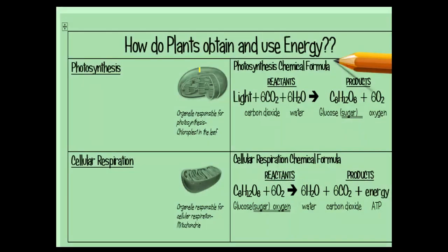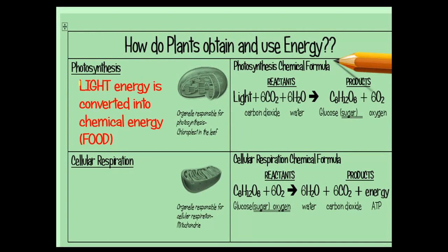Photosynthesis happens in the chloroplast. The chloroplast is an organelle in plant cells, and they're mainly concentrated in the leaves, because that's where photosynthesis happens. Basically, photosynthesis is when light energy from the sun is turned into chemical energy.